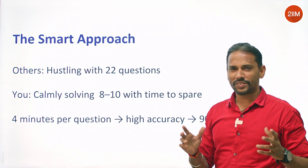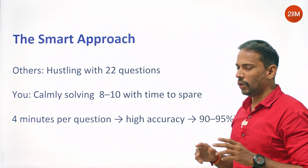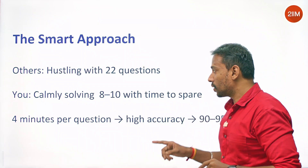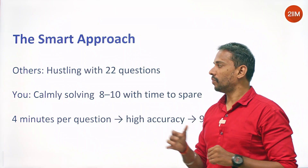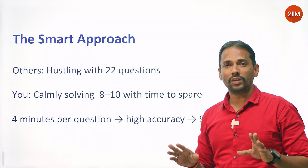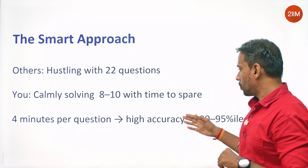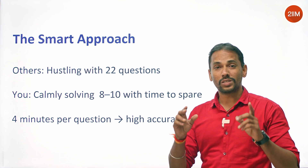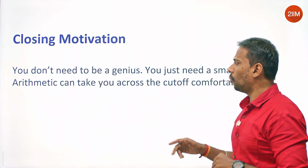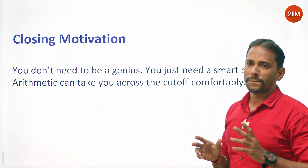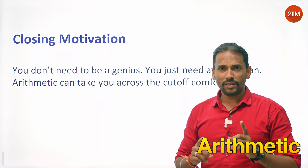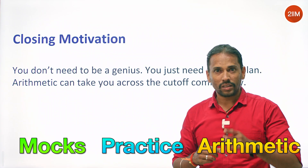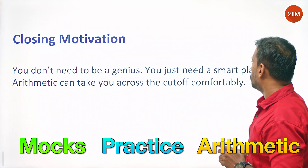Don't fight with all 22 questions. Attack those 8 to 10 arithmetic questions with high accuracy. Spend about 4 minutes per question — it is a doable thing. To attain that 90-95 percentile, attack with high accuracy. Basically, keep preparing the arithmetic topics and practice problems very clearly.